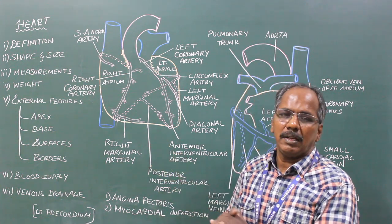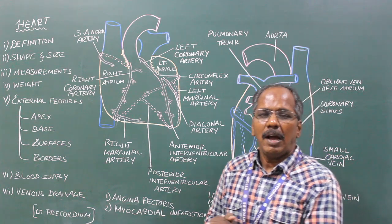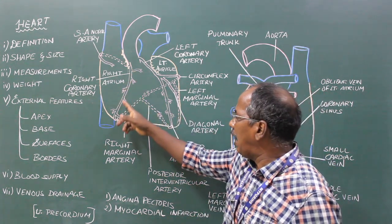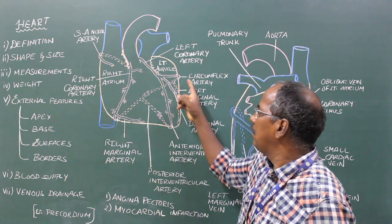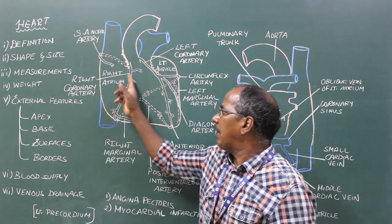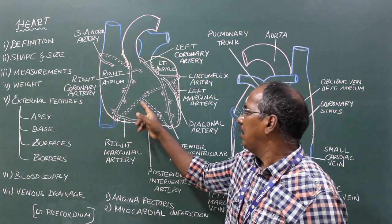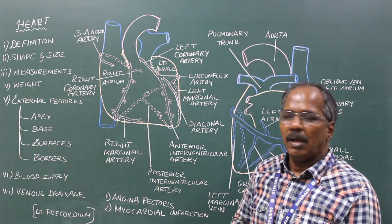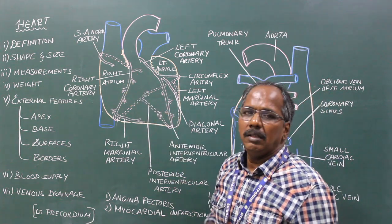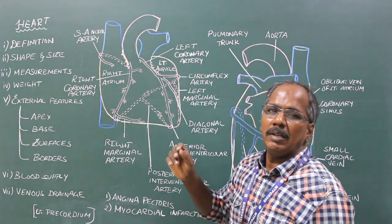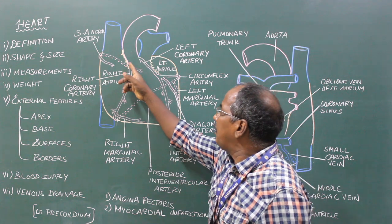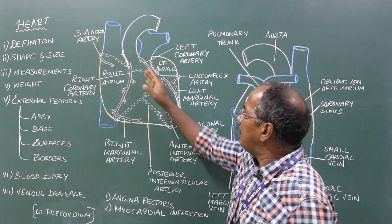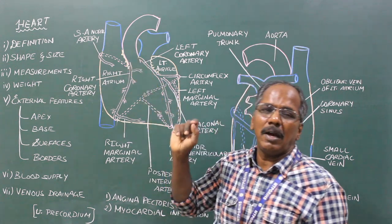Blood Supply of Heart. The heart is supplied by two main coronary arteries: right coronary artery and left coronary artery. Right coronary artery: Origin — it arises from the anterior aortic sinus present in the ascending aorta.